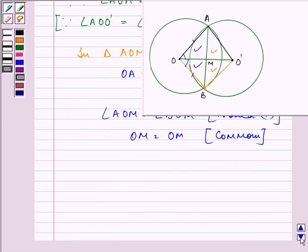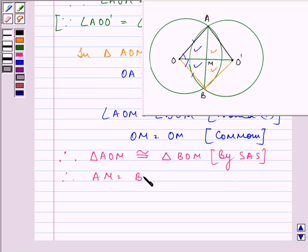So therefore triangle AOM is congruent to triangle BOM by SAS congruency criteria, and from that we can say that AM is equal to BM and angle AMO is equal to angle BMO. They are both by CPCT.